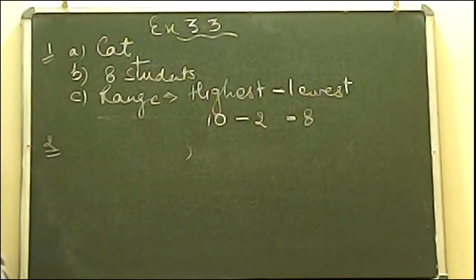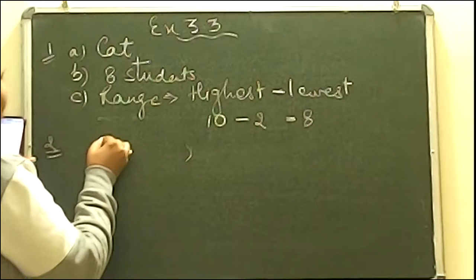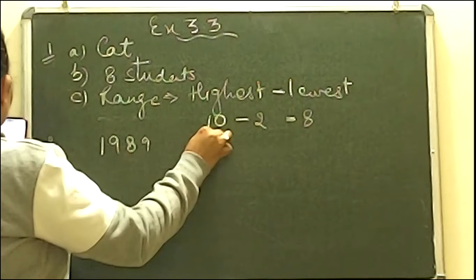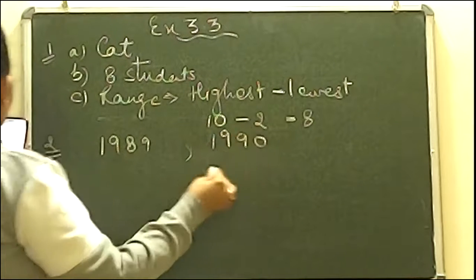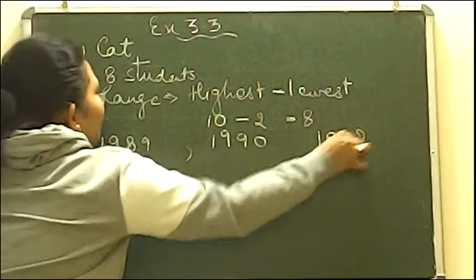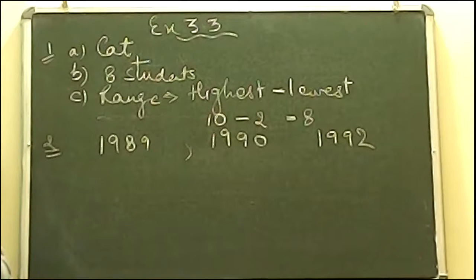The first question is about how many books were sold in 1989, 1990 and 1992. First you see the bar graph. On the x-axis you will find all the years are given. On the y-axis you have the number of books given. Tell me the number of books sold in 1989, 1990 and 1992.